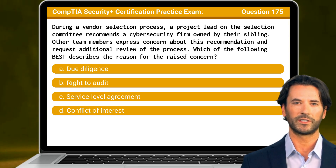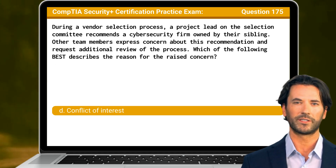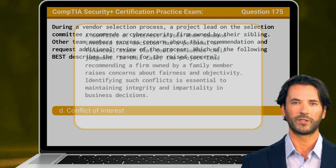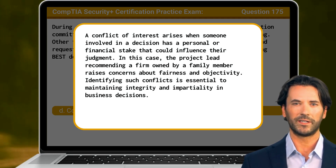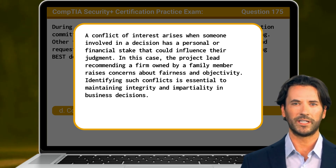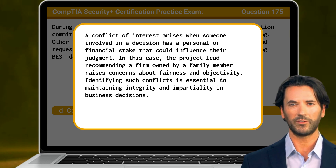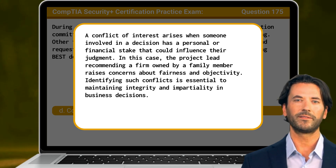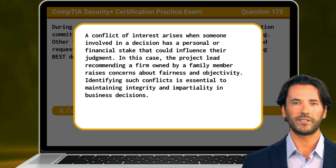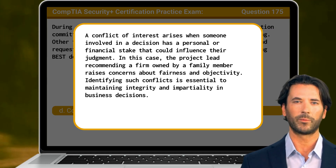The answer is D: conflict of interest. A conflict of interest arises when someone involved in a decision has a personal or financial stake that could influence their judgment. In this case, the project lead recommending a firm owned by a family member raises concerns about fairness and objectivity. Identifying such conflicts is essential to maintaining integrity and impartiality in business decisions.